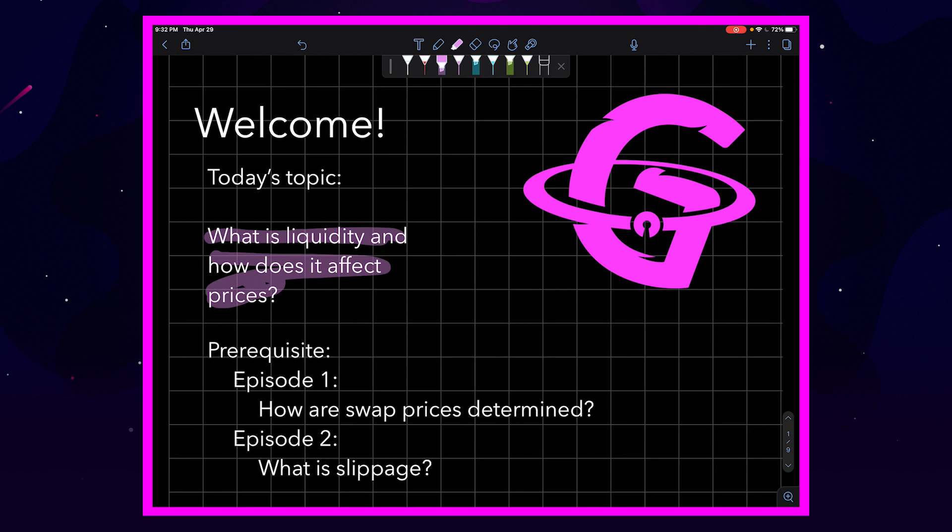Prerequisites to this episode are Episode 1: How are swap prices determined, and Episode 2: What is slippage. Liquidity has a really large effect on slippage and we're going to use the equation from the first episode in this one as well. So go back and watch those if you haven't seen them yet.